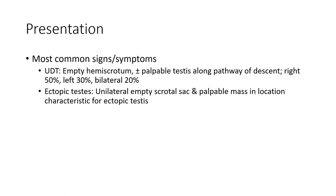Presentation: the most common sign and symptom for UDG is empty hemi-scrotum, plus or minus a palpable testis along the pathway of descent. Right side: fifty percent; left side: thirty percent; bilateral: twenty percent. Ectopic testis presents with unilateral empty scrotum and a palpable mass in a location characteristic for ectopic testis.